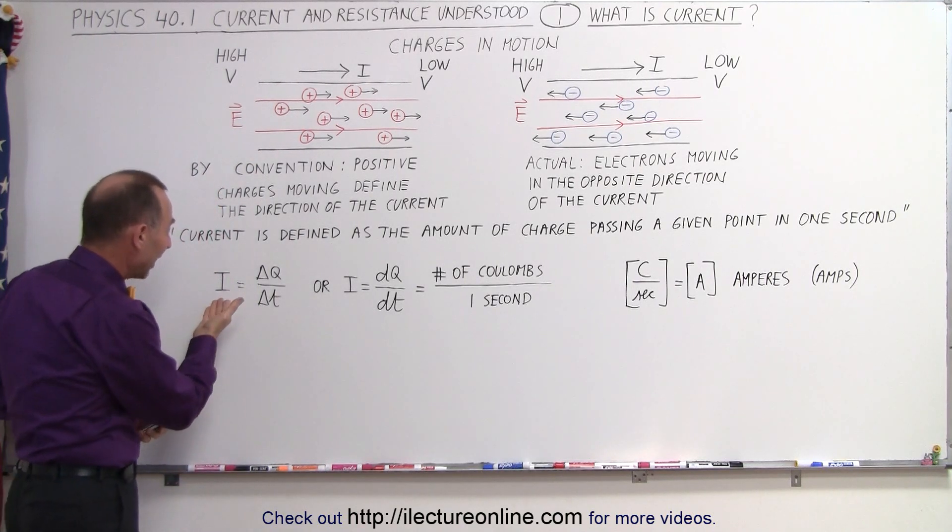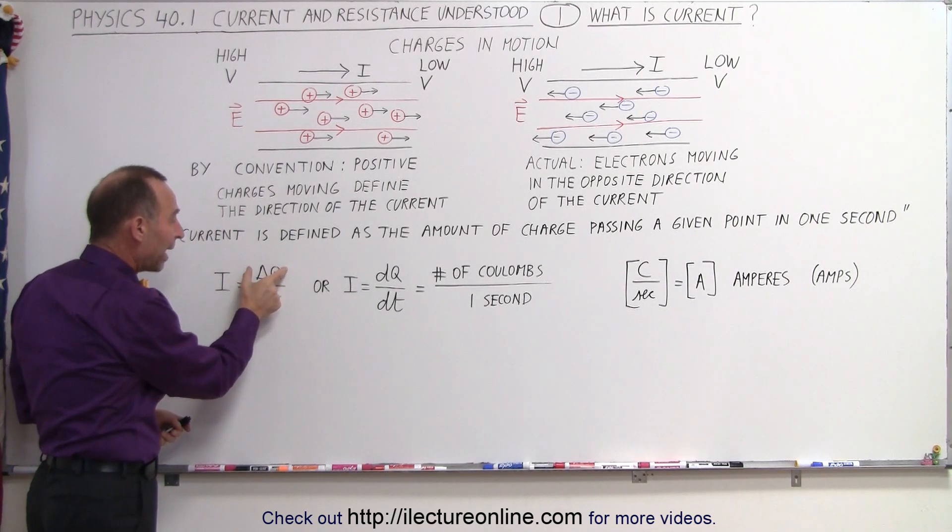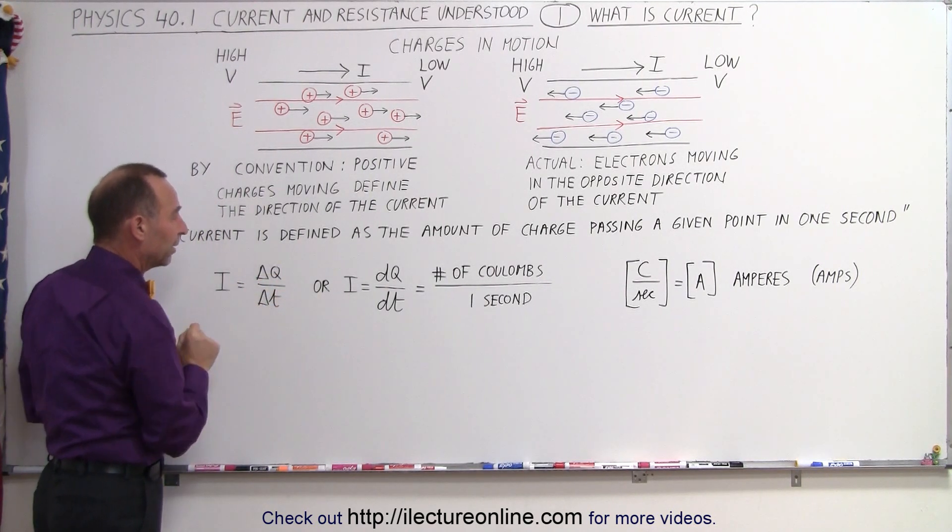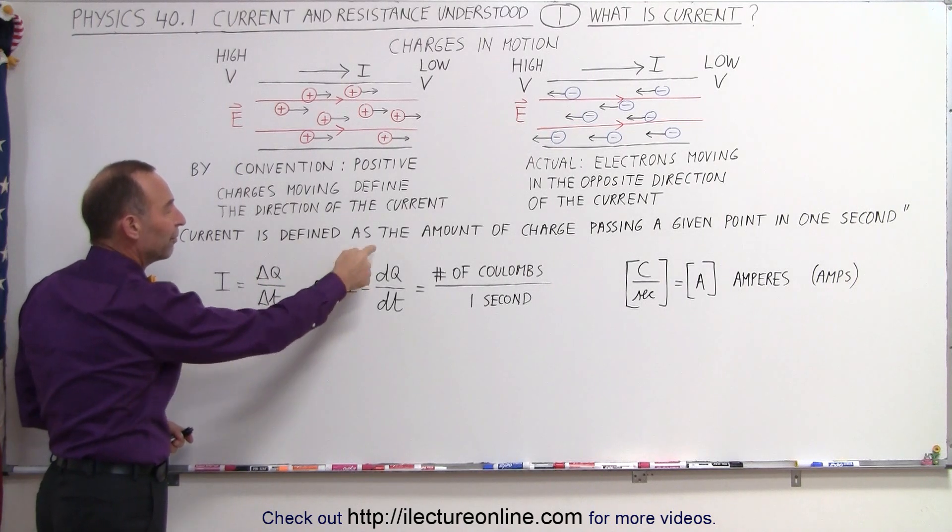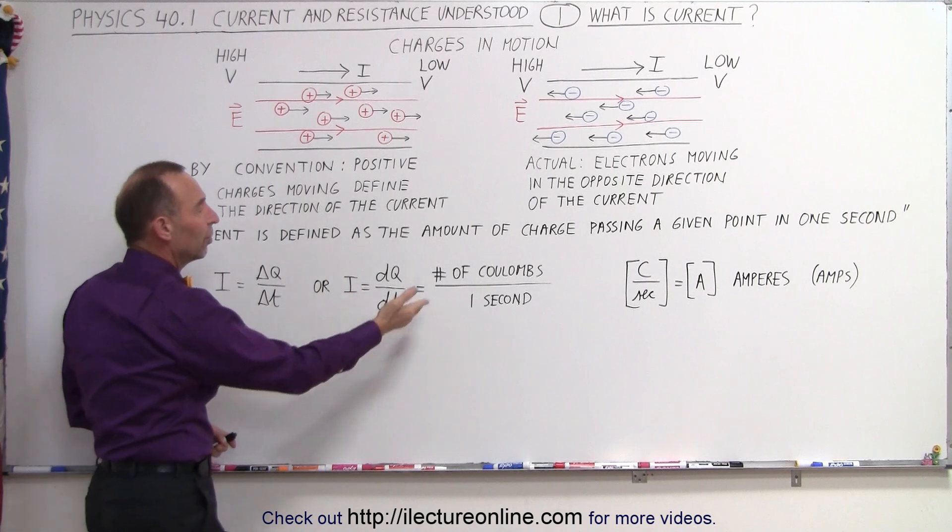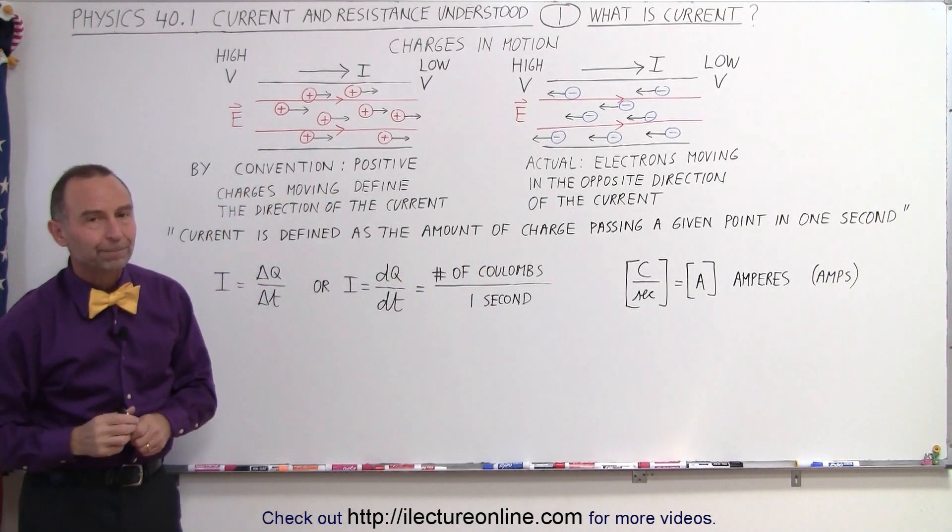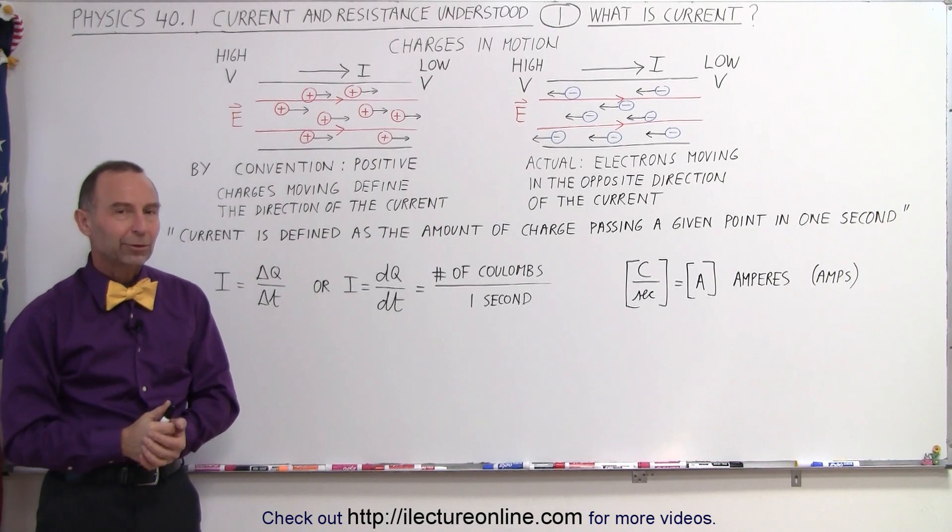So, if we want to define current, I, that's equal to the amount of charge passing by a given point in a certain amount of time, or we can write it as a differential equation, I equals dQ dt, which means the number of coulombs per second passing a given point in your circuit. And that's how we define current.